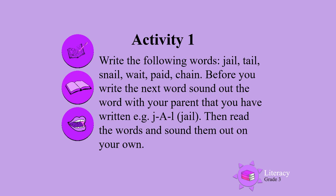Before you write the next word, sound out the word you've just written with your parents. For example, jail. Remember that the letters A and I in the middle of a word make the sound A. For example, tail — T-A-I-L — the letters A and I in the middle of 'tail' make the sound A. Then read the words and sound them out on your own.